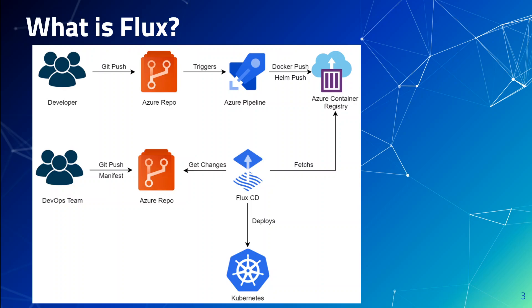If you look at this diagram, there are two pipelines. For the developers, they are building their container images on their local workstation and then pushing to their Git — which in this diagram is on Azure Repo. From that, the pipeline picks those container images, builds the artifacts, and pushes them to the Helm repository or to a container registry, such as Azure Container Registry.